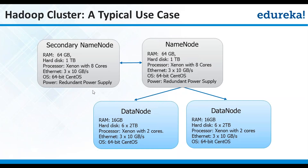Puneet is asking: does it mean automatic failover? Secondary name node does not do an automatic failover. Only the standby node will do an automatic failover. It is not on this slide right now, but you typically talk about a standby node which does an automatic failover.